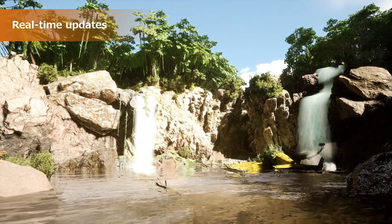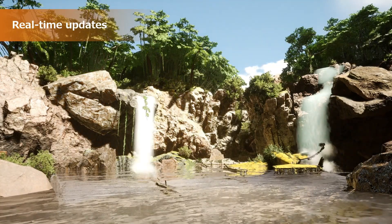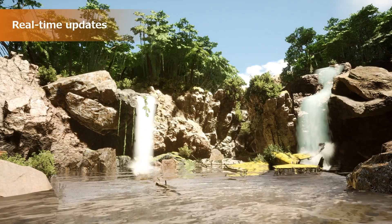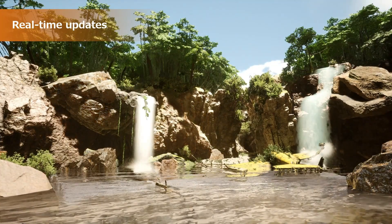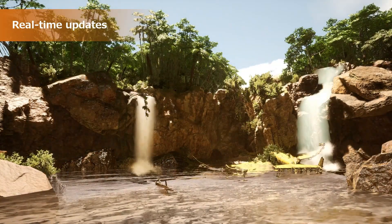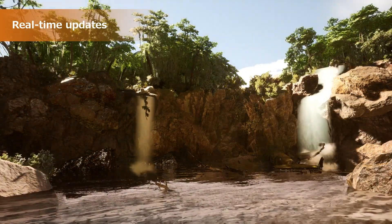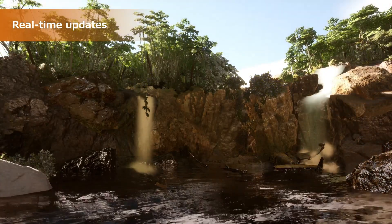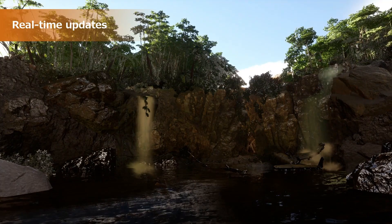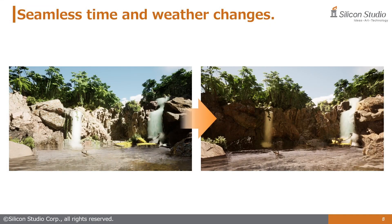A prime example of where Enlighten provides an advantage is in the ever-growing popular open world game genre. Weather and time of day changes require dynamically updated global illumination, which Enlighten provides. In the video currently playing, we can see as the time of day changes, the lighting is accurately updated. Pay particular attention to the areas not in direct sunlight where only indirect lighting is received. Here is the same scene at different timestamps which highlight the change in light source, and we can see the environment still receives realistic indirect lighting.